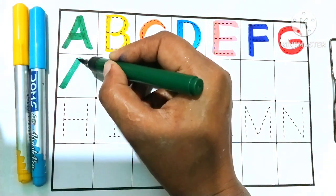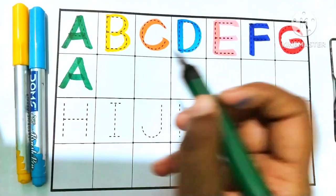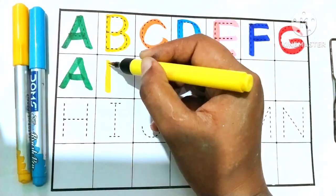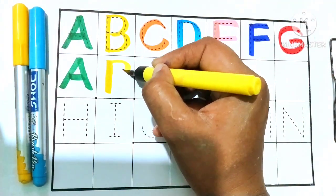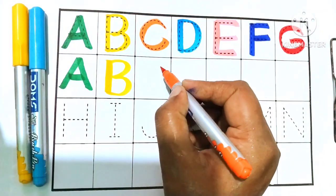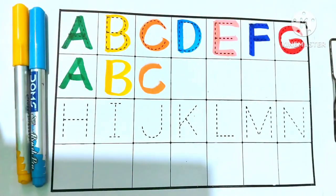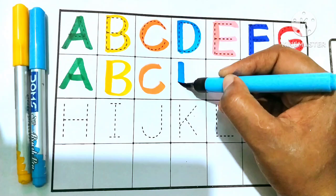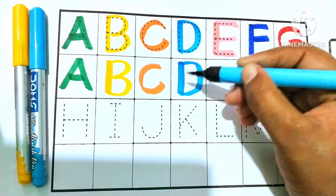A for Aeroplane. B. B for Ball. B for Ball. C for Cat. D. D for Dog.